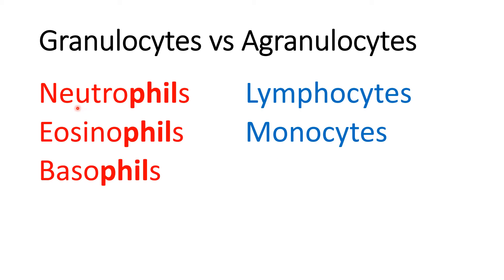The way I remember this: neutrophils, eosinophils, and basophils are filled with granules — they are your granulocytes. The opposite are your lymphocytes and monocytes — these are your agranulocytes, the ones that are lacking the granules.